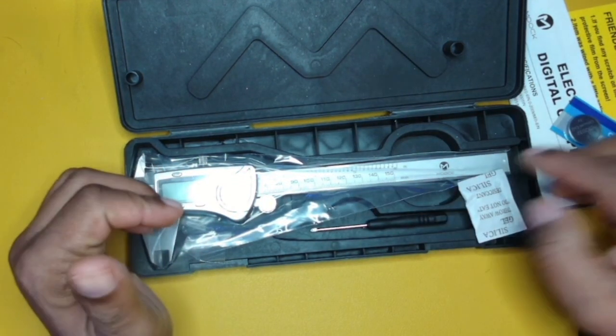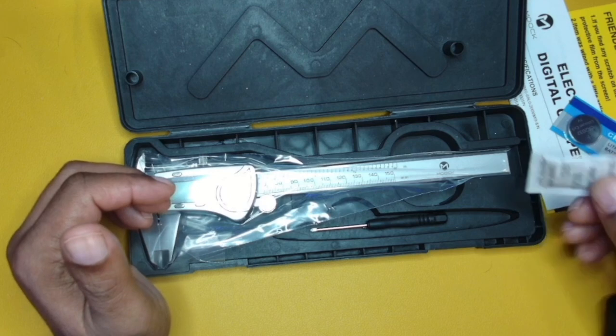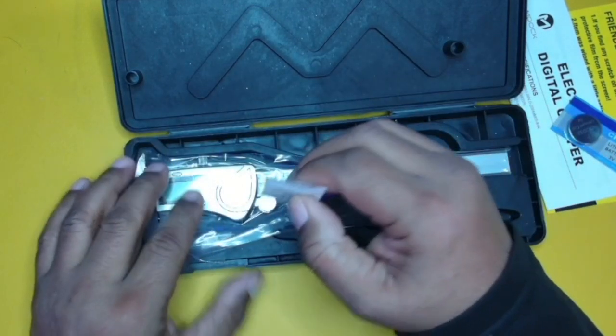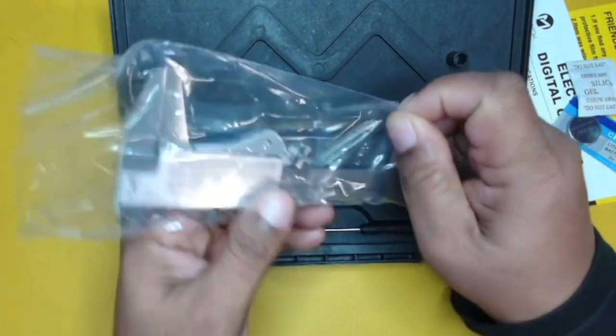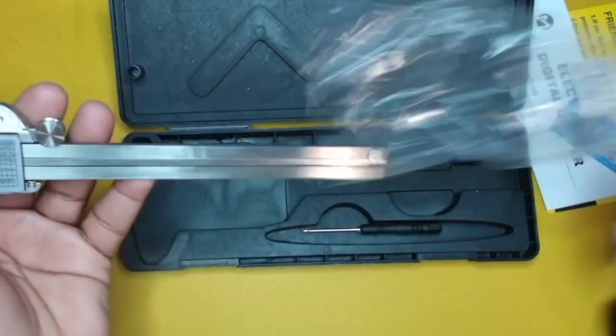So you can just kind of leave that in there if you're not going to be using it. And of course, you know what this gel is for, just to help keep everything dry. Now here's our actual caliper. And I can tell you right now, I can feel the weight of this. This is all metal.